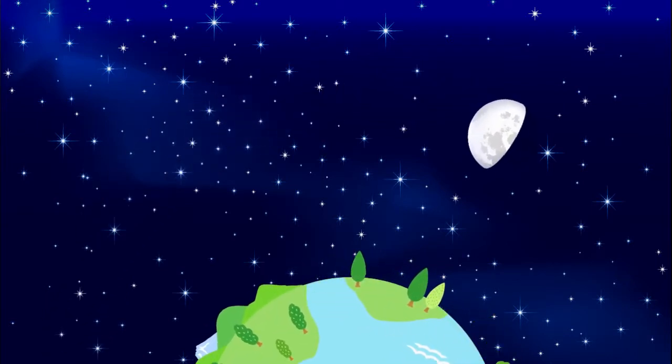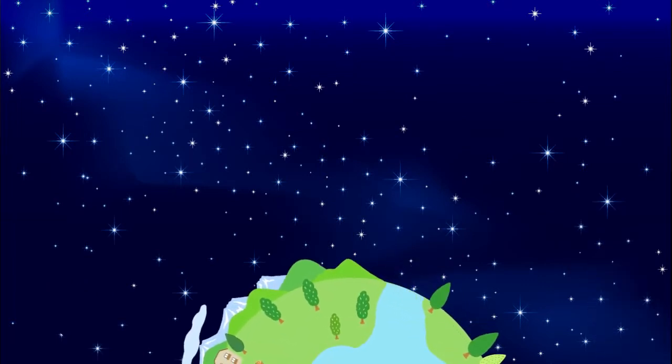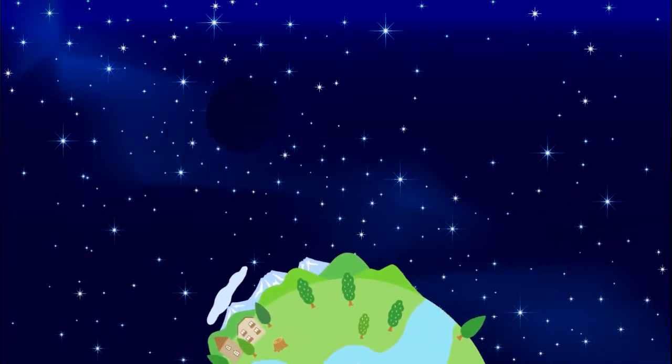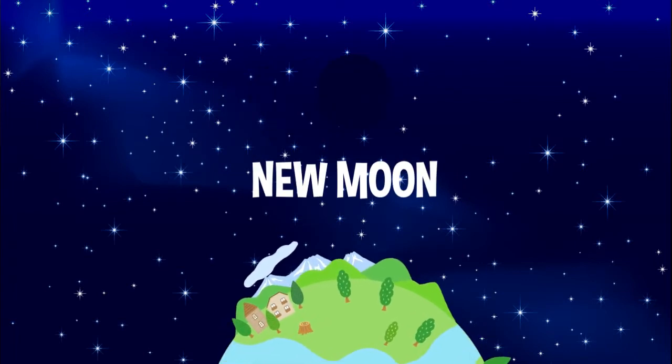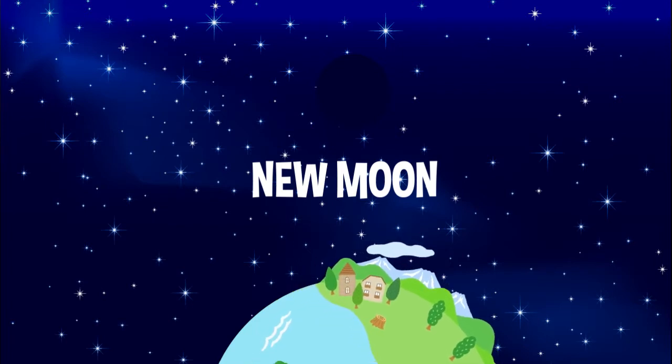Phases are the different shapes of the lit part of the moon that can be seen from Earth. During the new moon, the moon is completely dark because it is between the sun and Earth.